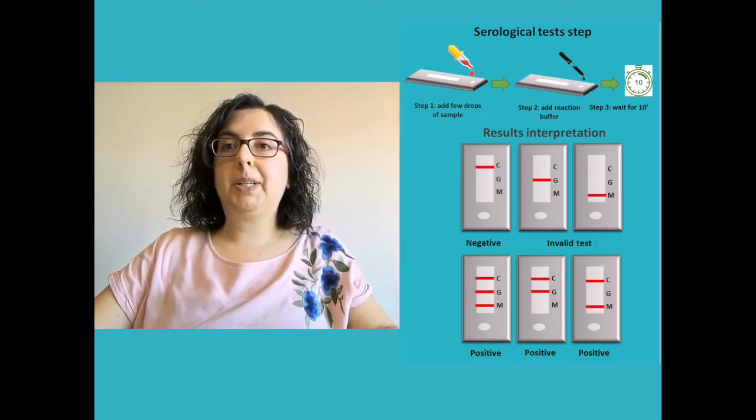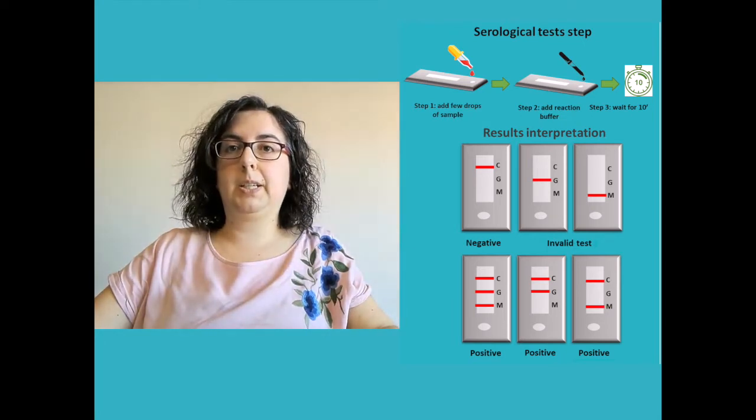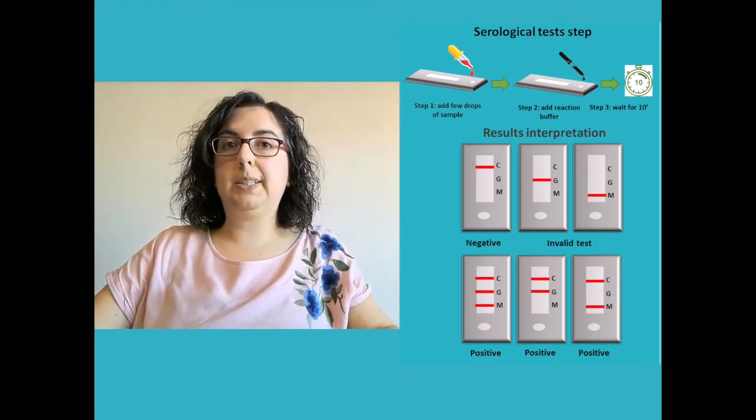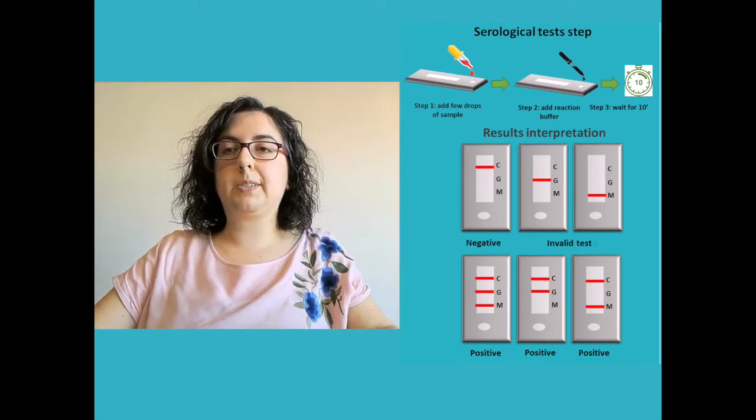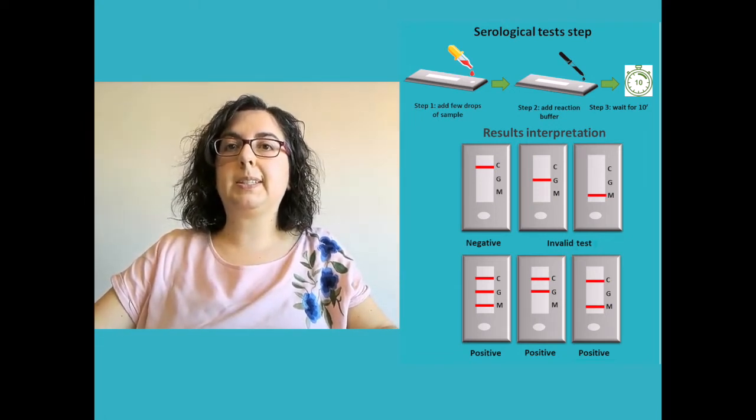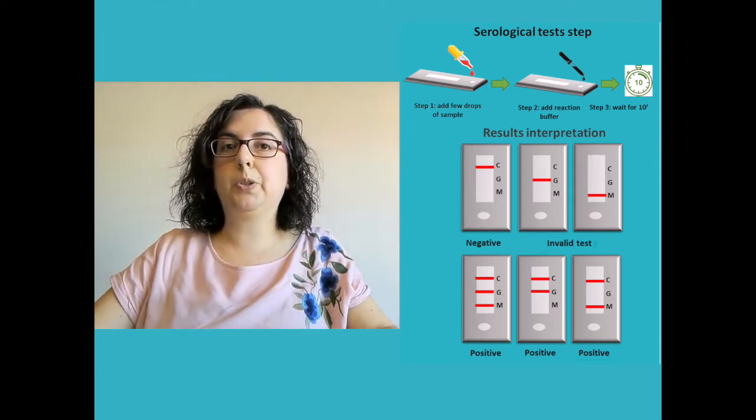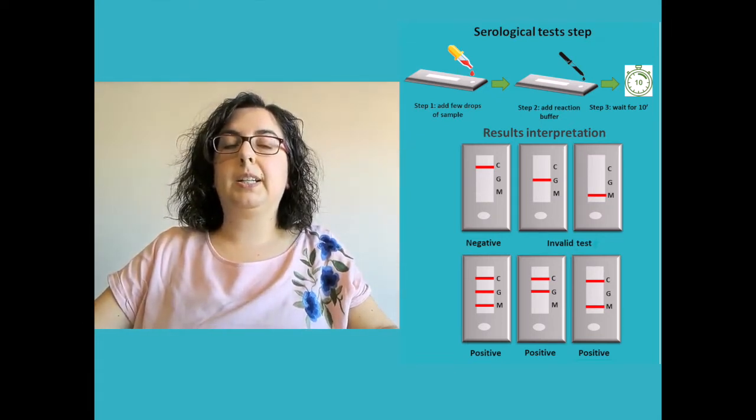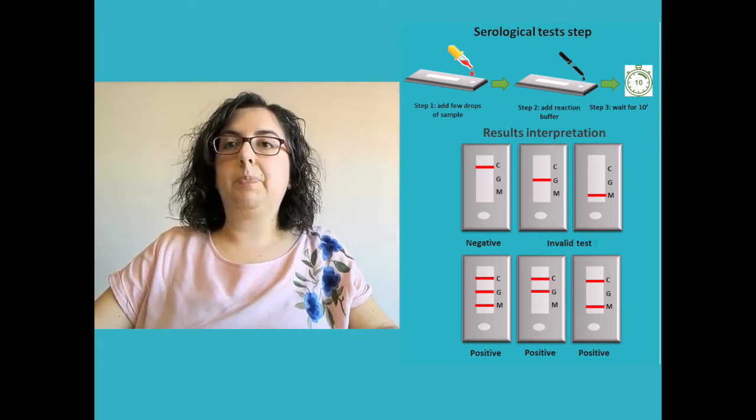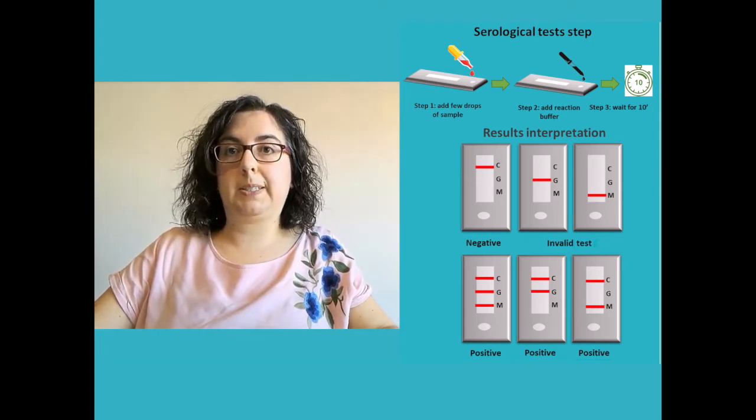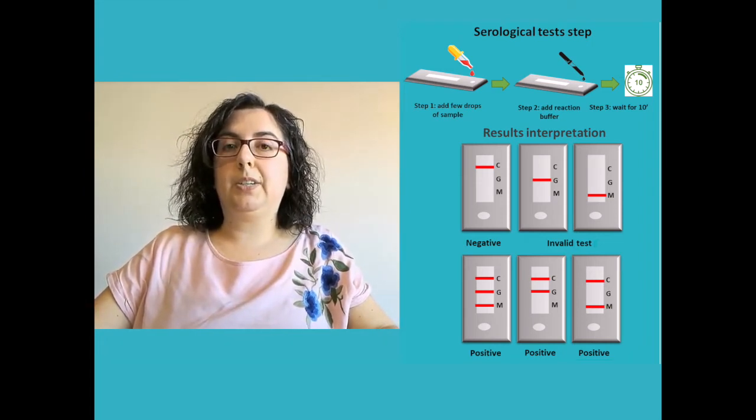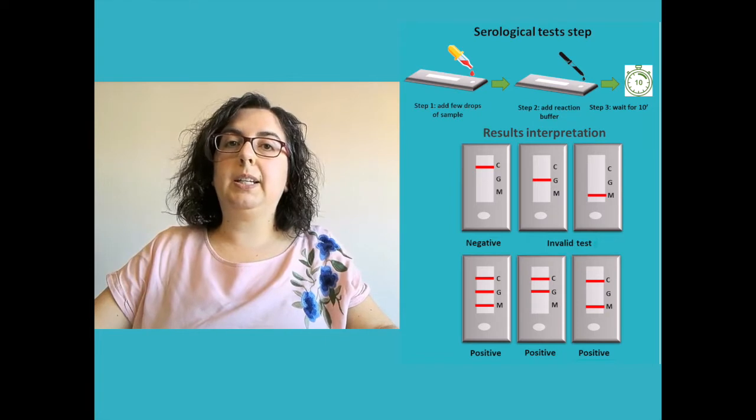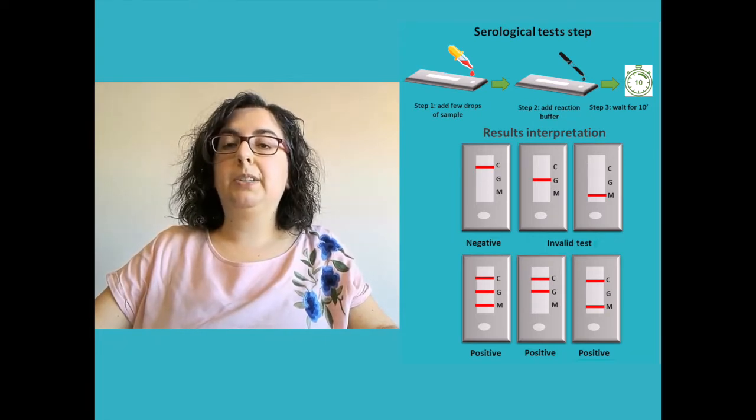The rapid tests are lateral flow chromatographic immunoassays which can detect antibodies against the SARS-CoV-2 virus. The test cassette consists of one pad containing SARS-CoV-2 recombinant antigens, S or N protein, and nitrocellulose membrane strips containing an IgG line, then an IgM line, and the control line.